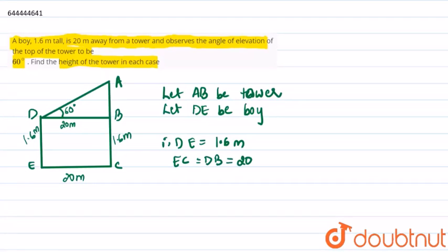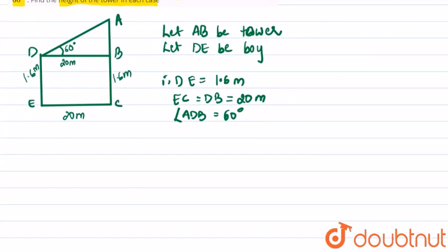We have been given that the angle of elevation from point D is angle ADB equal to 60 degrees. We need to find the height of the tower, that is AC. Now, in triangle ABD...